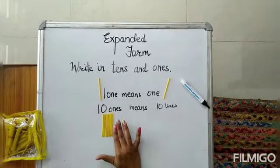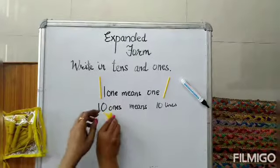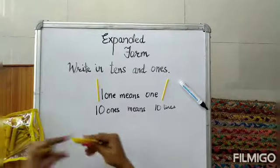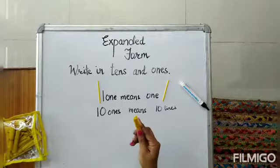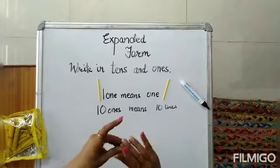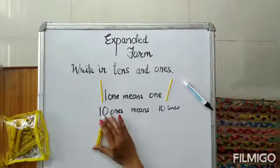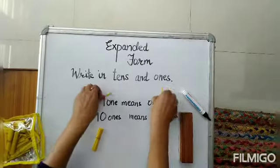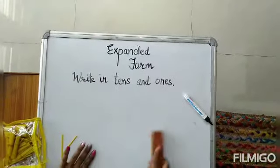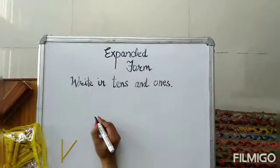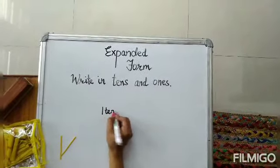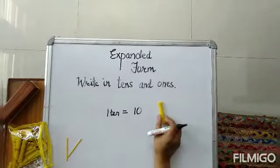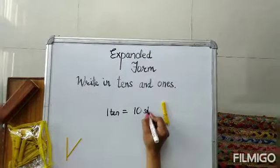Now if I group these 10 sticks together in a bundle, I will get 1 ten. I have tied these 10 sticks and I got 1 bundle, and it is of 10s — 1 ten. In this, 1 ten means 10 sticks. So 1 ten is having 10 sticks, as I have tied them in a bundle.